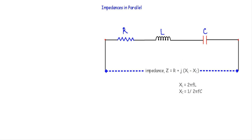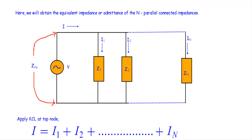Let's say we have impedances Z1, Z2, up to Zn connected in parallel. One end of Z1, Z2, and Zn are connected at a common point, and the other ends are connected at another common point. We apply an alternating voltage V = Vm·sin(ωt), where V is the RMS value applied between the two terminals, and I is the current flowing through the circuit.